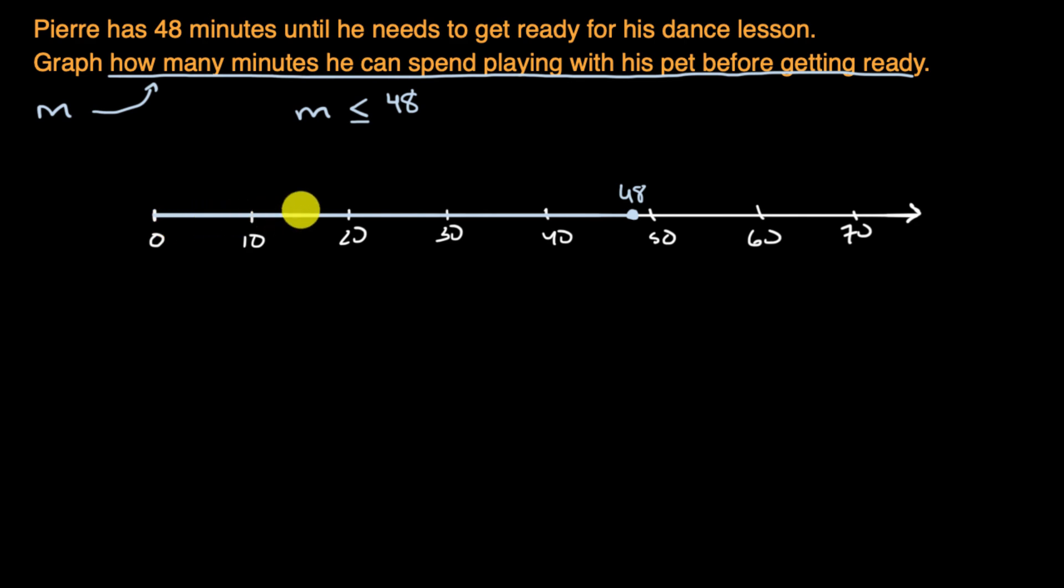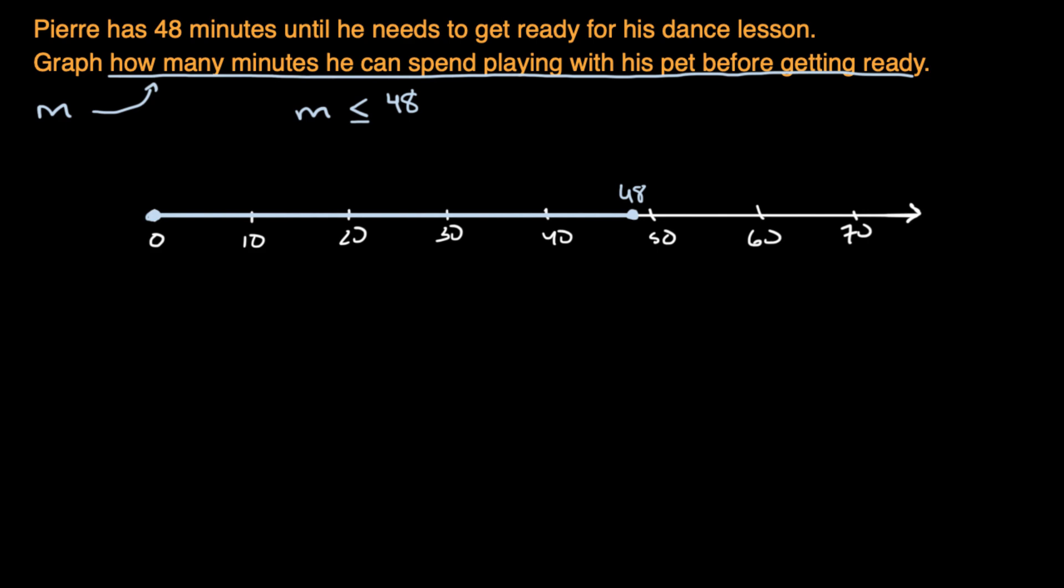And so it would look something like this. I'm doing that light blue color. It would look something like that. And if we wanted to be clear that we're including zero, we could actually put a dot here as well. It wouldn't make sense to go and include negative values as well. But let's do another example, a different example.